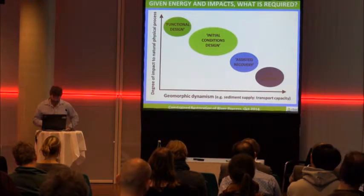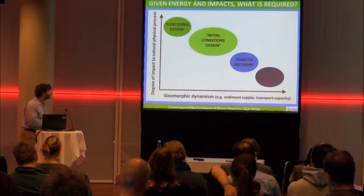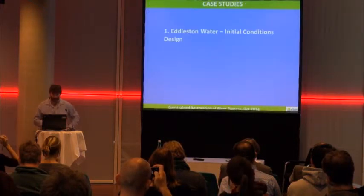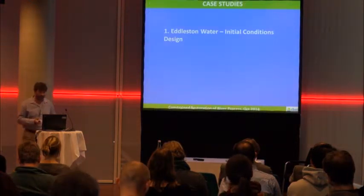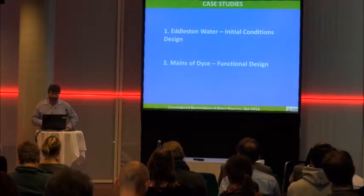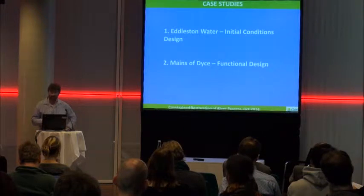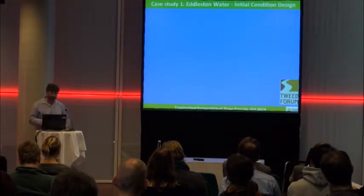I'll show an example later where the failure to do this results in failure of design. I want to go through two case studies: one in initial conditions design and one in functional design. These are the Edelson Water in the Scottish Borders, an example of initial conditions design, and then Mains of Tice, an urban system in Aberdeen City, an example of functional design with a greater degree of physical constraints.